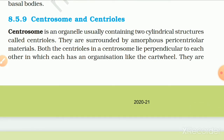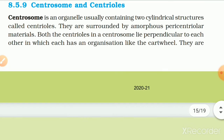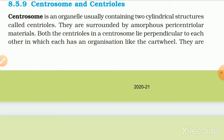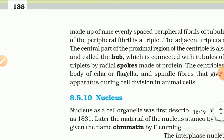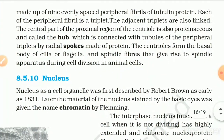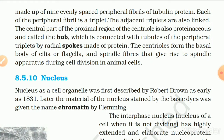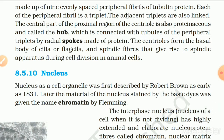8.5.9 Centrosome and Centrioles. Centrosome is an organelle usually containing two cylindrical structures called centrioles, surrounded by amorphous pericentriolar material. Both centrioles in a centrosome lie perpendicular to each other, each with a cartwheel-like organization. They are made up of 9 evenly spaced peripheral fibrils of tubulin protein, each of which is a triplet, with adjacent triplets also linked. The central part of the proximal region is called the hub, connected to the peripheral triplets by radial spokes of protein. The centrioles form the basal body of cilia or flagella and the spindle fibers that give rise to the spindle apparatus during cell division in animal cells.